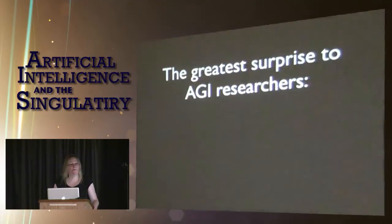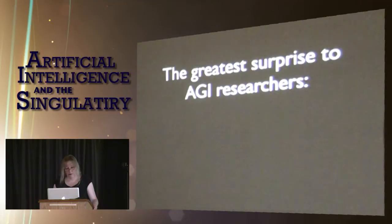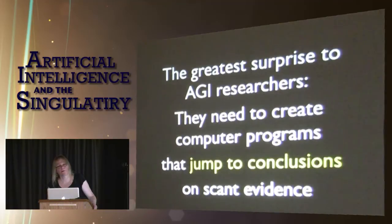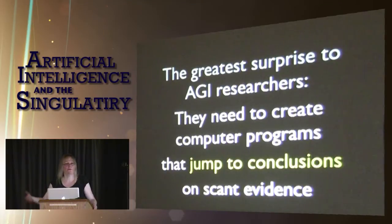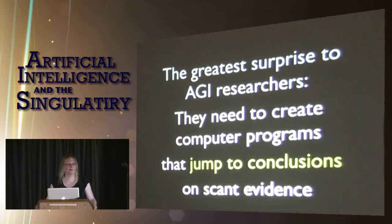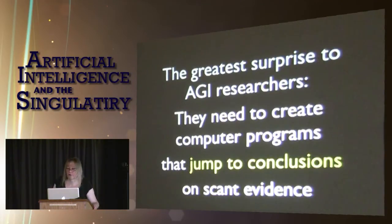The greatest surprise to AGI researchers is that they need to create computer programs that jump to conclusions on scant evidence. That doesn't sound very scientific — and our brains aren't that scientific. All of those hundred-plus cognitive biases that everybody thinks are such a bad thing are directly followed from the fact that we have understanding at all. We can fight against making mistakes of this kind by understanding what kind of mistakes we're making, but we have to recognize that they're basically the direct consequence of having intelligence — and our machines are going to have the same problems.